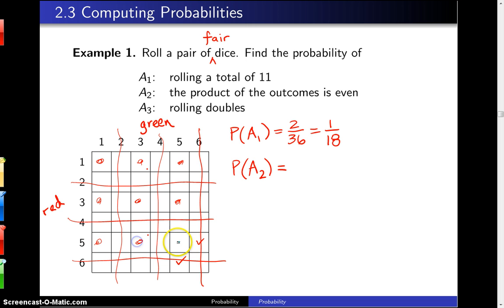So because we're missing nine that correspond to an odd product, that is 27 out of 36 correspond to an even product, and in lowest terms that is 3/4.